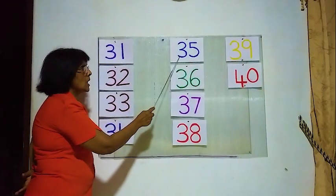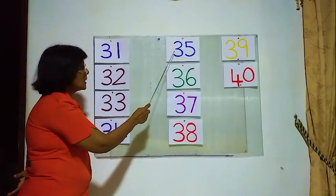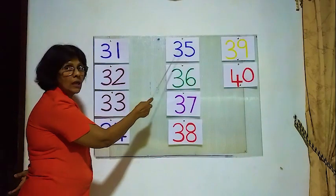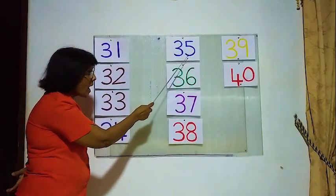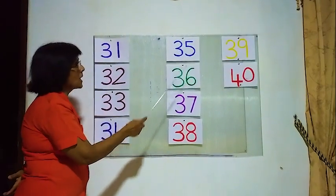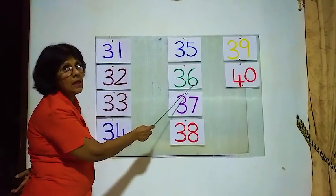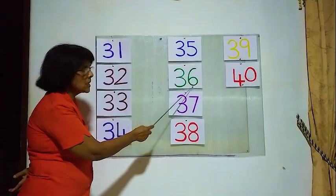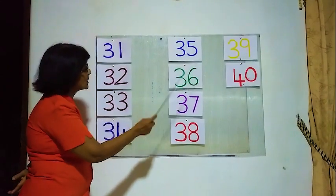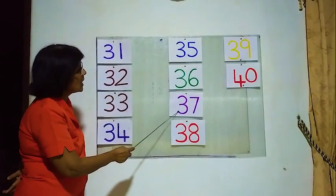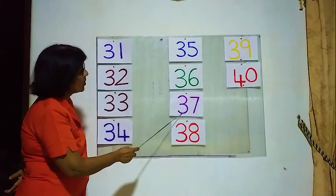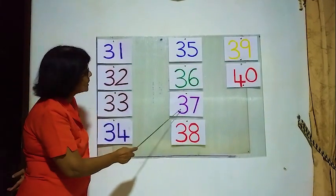Here 3 and 5, 35. 3 and 6, 36. Here 3 and 7, 37.